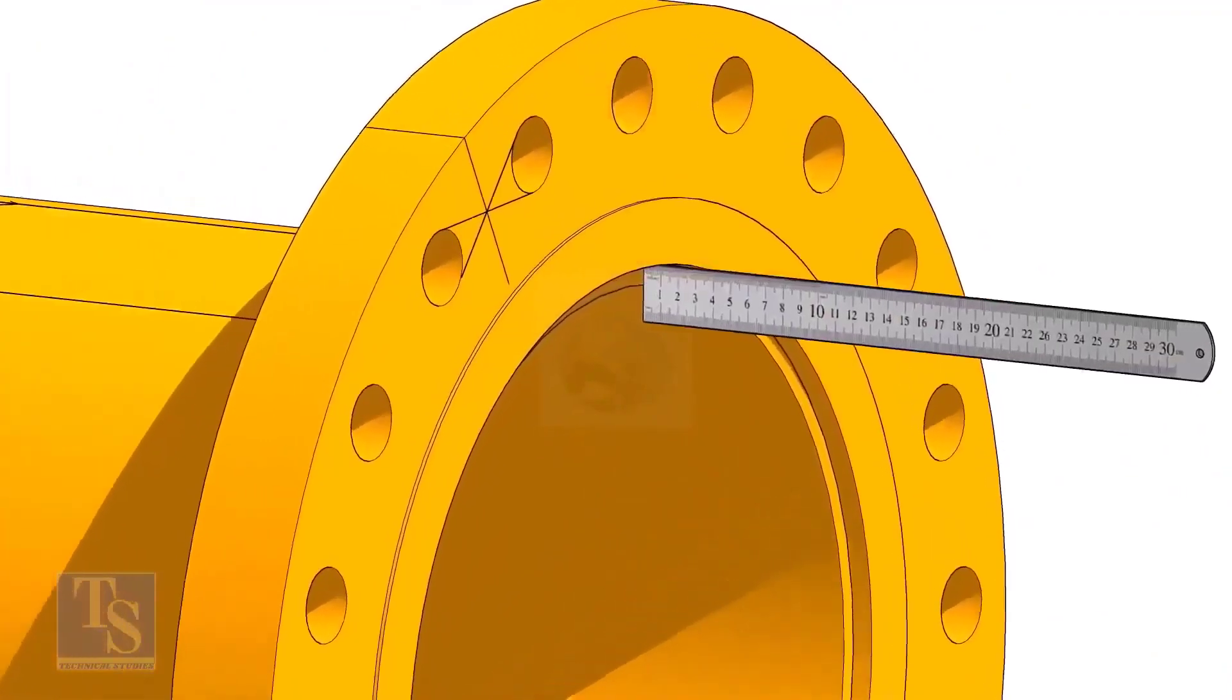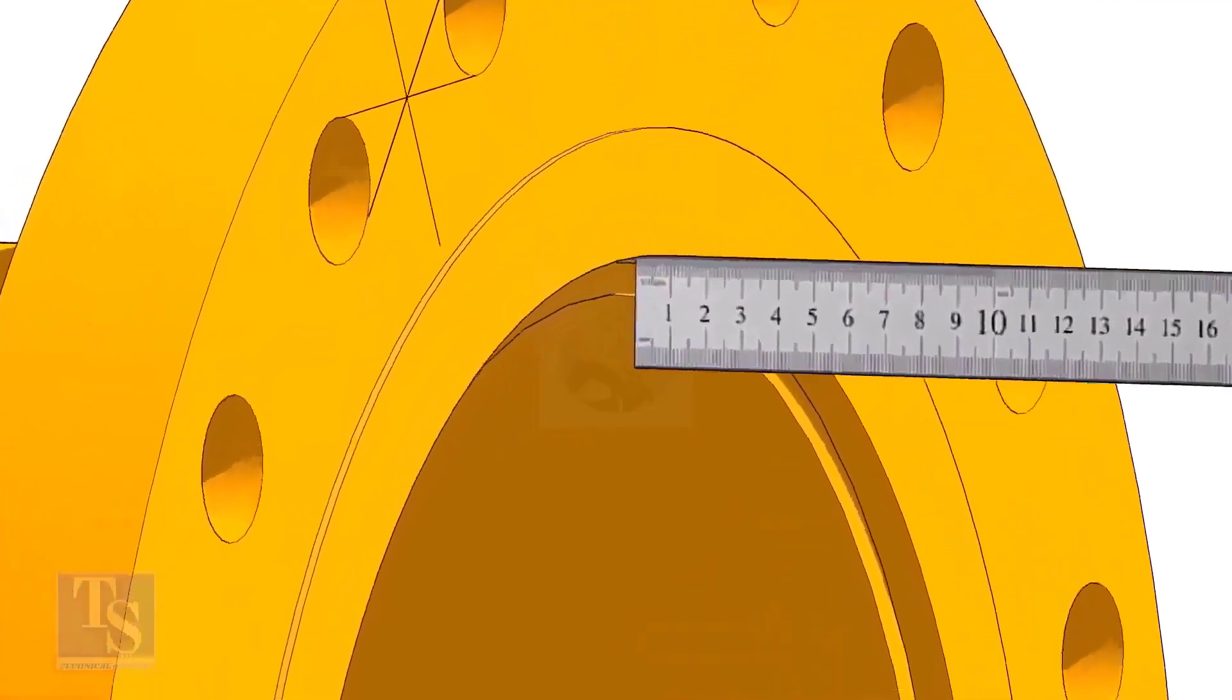Fix the distance between the flange face and the pipe face. Usually, this measurement is equal to the thickness of the pipe.